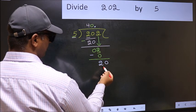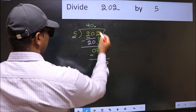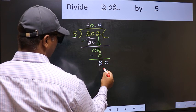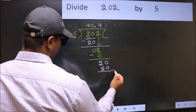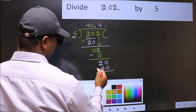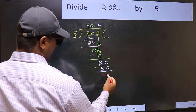So 20. When do we get 20 in 5 table? 5 fours 20. Now you should subtract. 20 minus 20, 0.